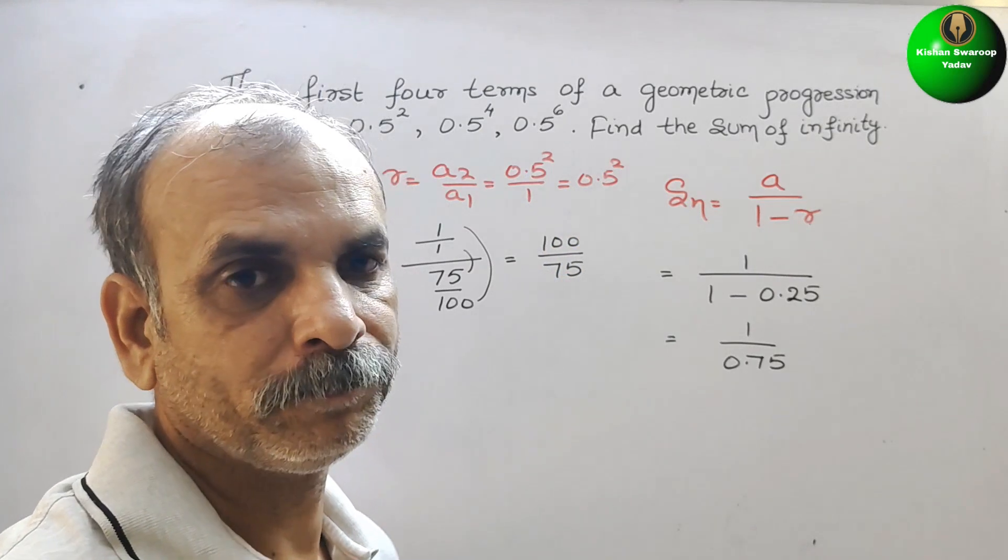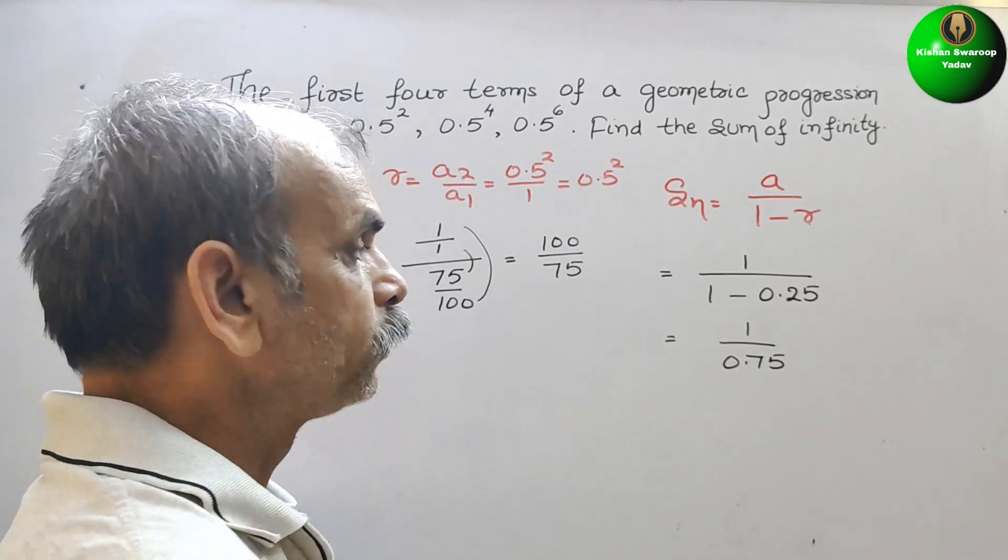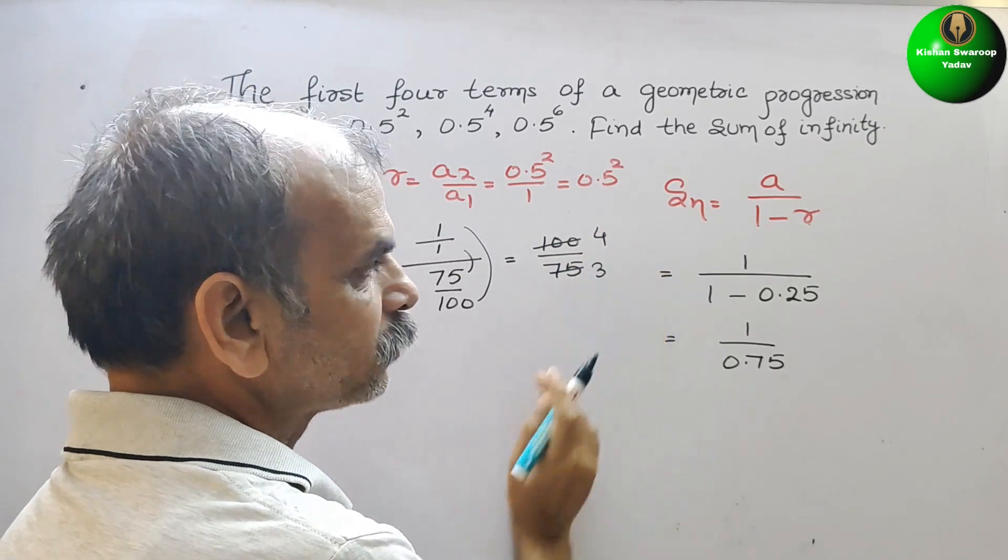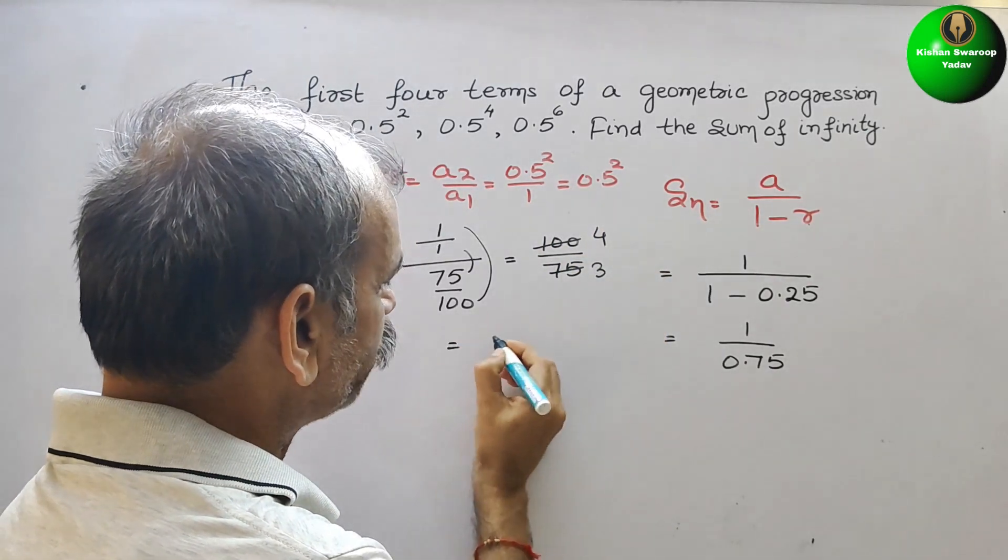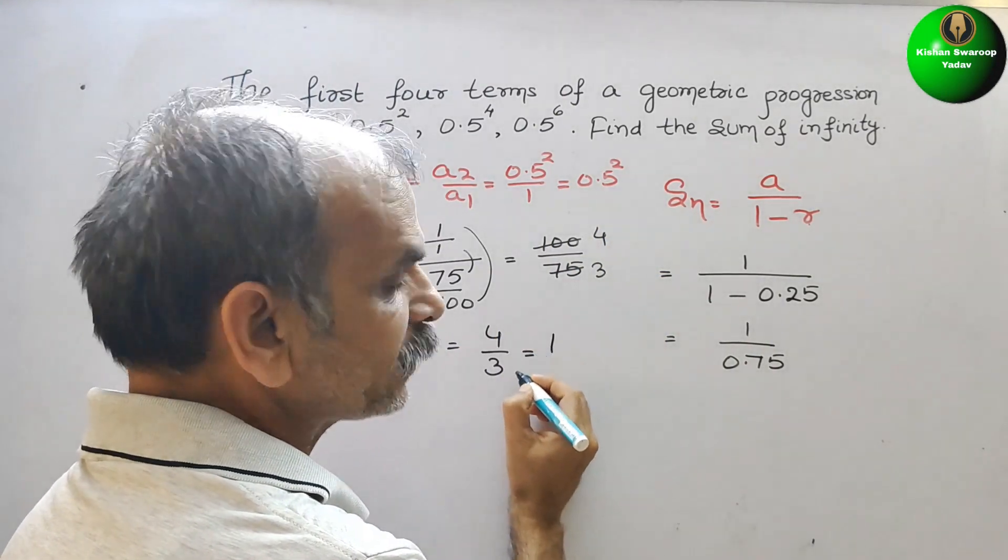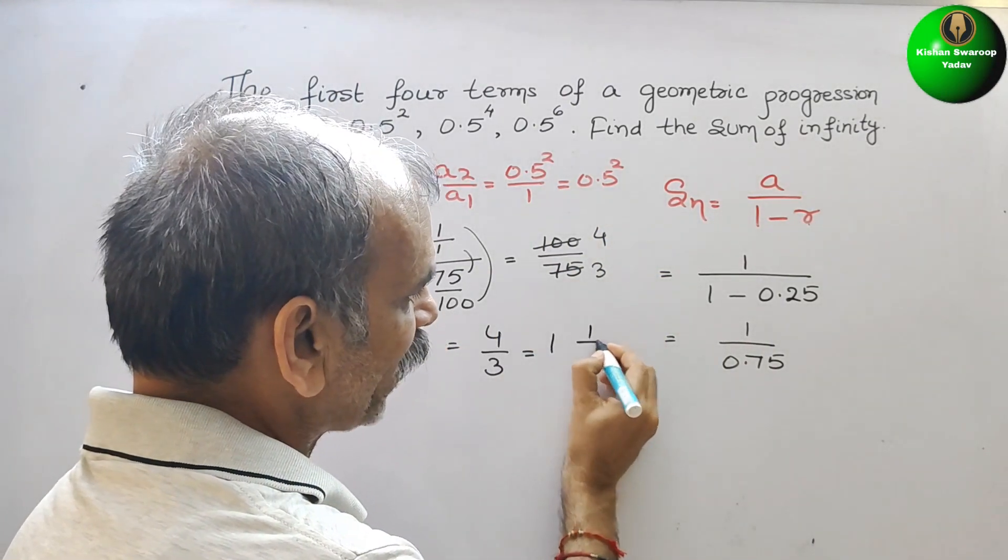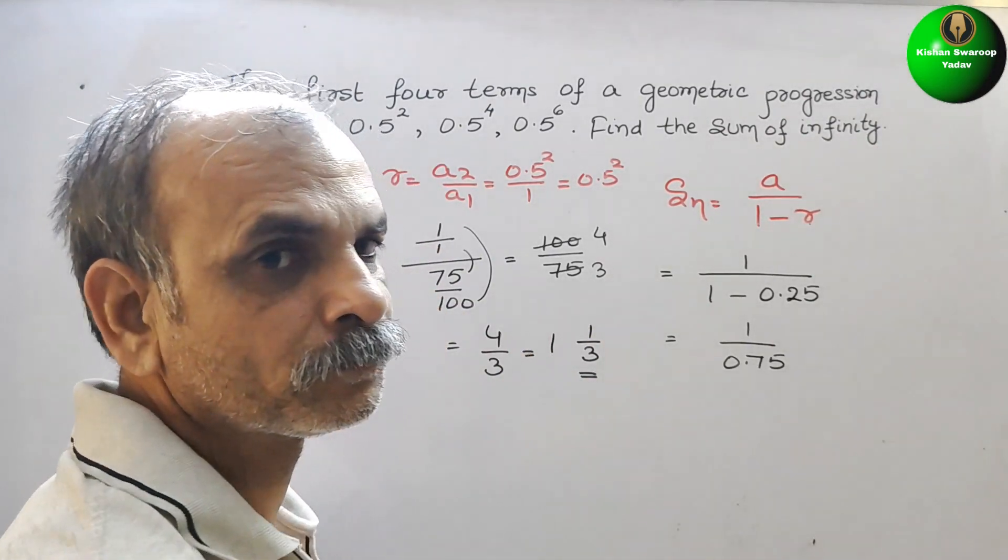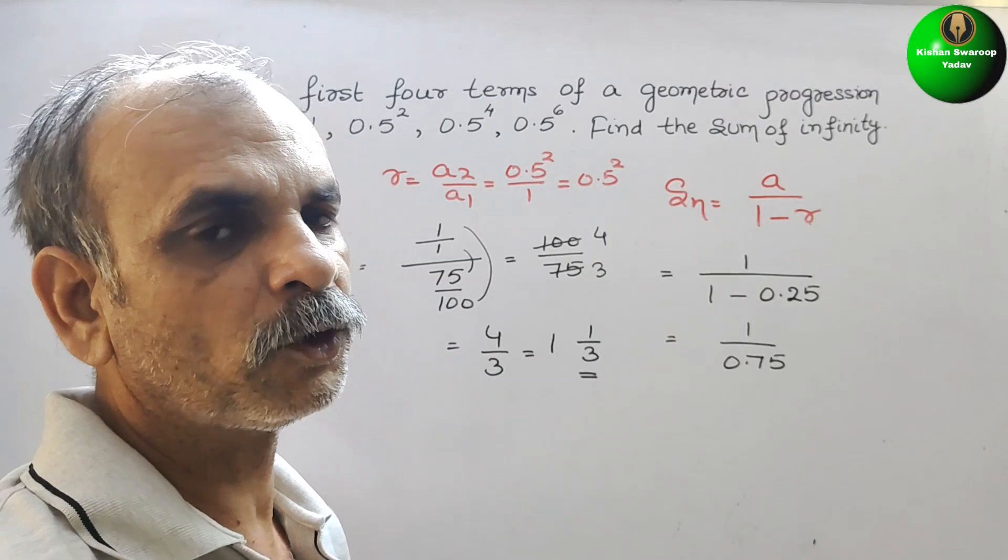Now reduce them. It will be 25 four times and 25 three times. We will get 4 by 3. That is equal to we can say 1 and 1 by 3. This is your sum. Like this we have to find it out.